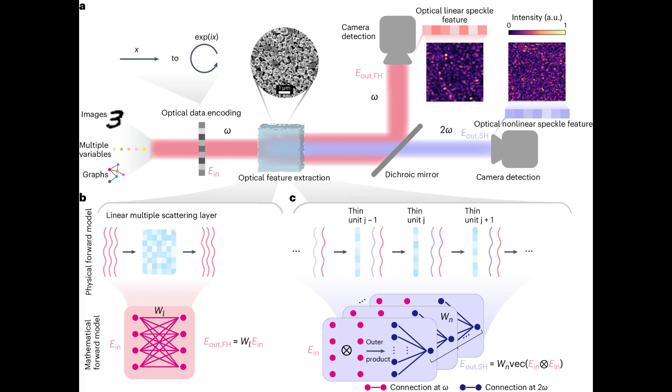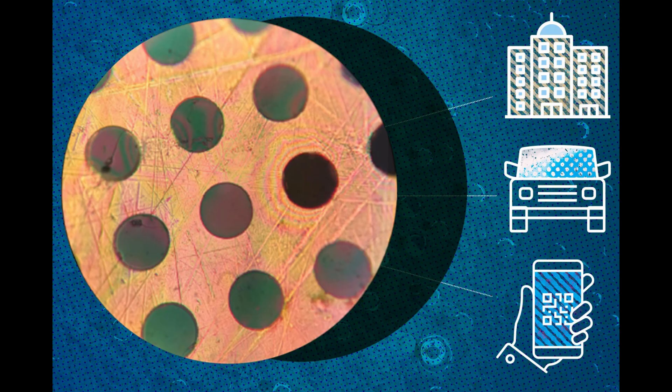Using algorithmic design, they generated thousands of disordered structures and tested them computationally. And buried in the data, they found something extraordinary—a material that combined properties scientists thought were mutually exclusive. They called it a gyromorph. And it's unlike anything we've seen before.